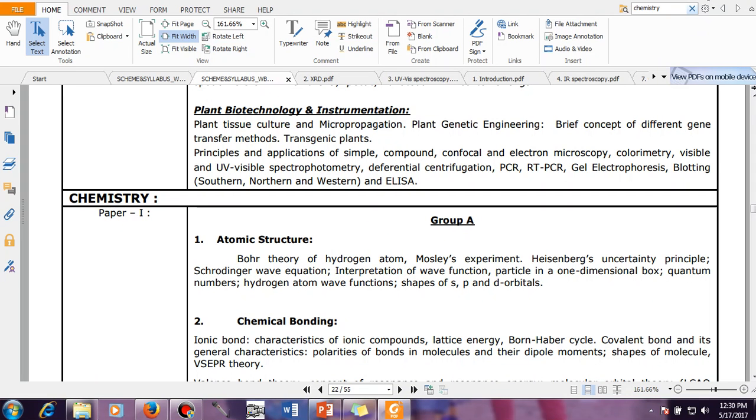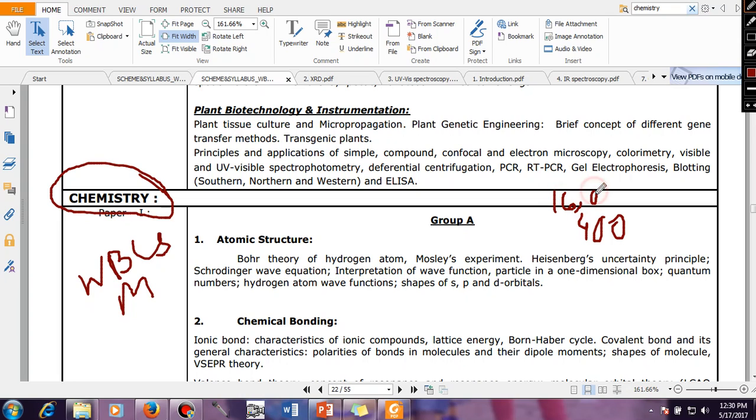This is chemistry. This is the main syllabus - WBCS Main syllabus. You have two papers, Paper One and Paper Two, each contains 200 marks. That means you have total 400 marks in your optional paper. This 400 marks you have in your optional papers and WBCS Main is of total 1600 marks.